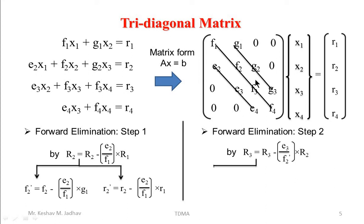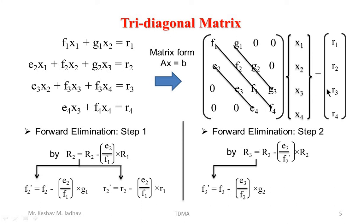We then write this operation for F3: R3's element is F3 and the corresponding R2 element is G2, giving new value F3'. The same operation on the right-hand side gives new value R3'. So in the second step also, we perform this row operation only two times — on F3 and R3.